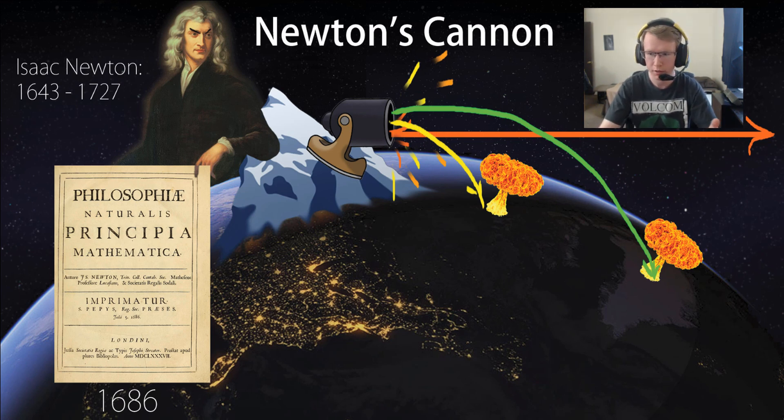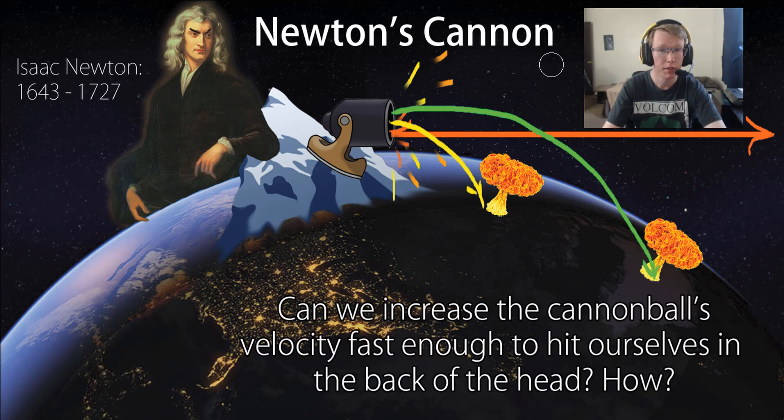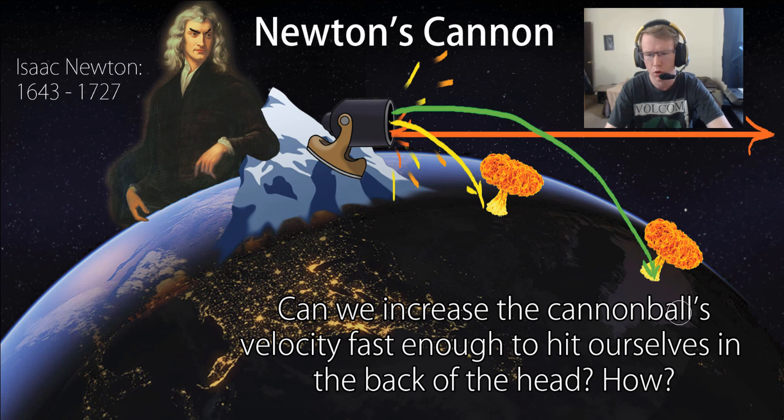So his question quickly, very quickly, I'm sure, became, can we increase the cannonball's initial velocity fast enough to where it hits us in the back of the head? To where the lead cannonball goes around the entire Earth? And just smacks us? Hmm. Man, that would be unfortunate. So this right here, this is kind of the core question behind the Newton's Cannon Thought Experiment. Can we increase the cannonball's velocity fast enough to hit ourselves in the back of the head? And if so, how could we do it? How fast does the ball need to go? So what needs to happen?